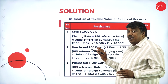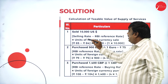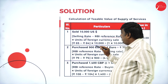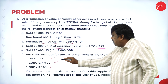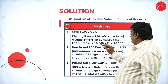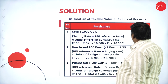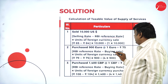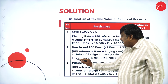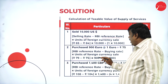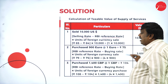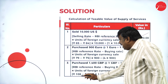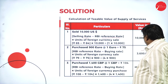We need to calculate the taxable value of supply. Case 1 — sold 10,000 US dollars, so selling rate minus RBA reference rate: 65 minus 64 = ₹1, multiplied by 10,000 = ₹10,000. Case 2 — purchased 900 euros: RBA reference rate minus buying rate = 79 minus 75 = 4, multiplied by 900 = ₹3,600. Case 3 — purchased 1,400 GBP: 108 minus 104 = 4, multiplied by 1,400 = ₹5,600.